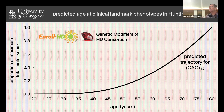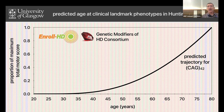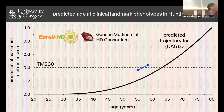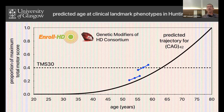We're looking at total motor score — a series of measures to determine how well someone can control their movements. With the large dataset, statisticians have been able to predict a trajectory for the average person with 42 CAG repeats. We choose a particular threshold, in this case TMS-30, and look at the longitudinal data from any individual and ask when they crossed that threshold relative to the predicted line. A person who crossed that line earlier has a more severe form of the disease. Some people haven't yet reached that point, but using their longitudinal data we can extrapolate forward to predict when they would cross that threshold.